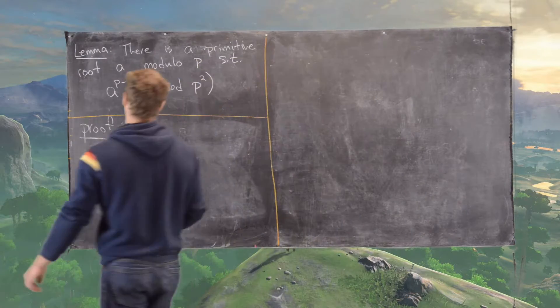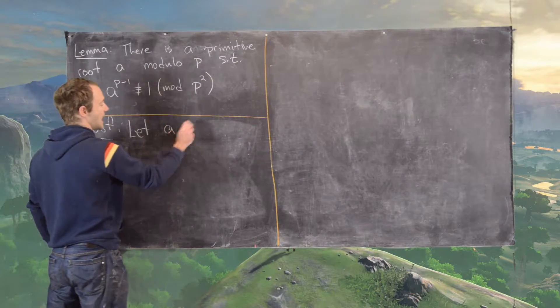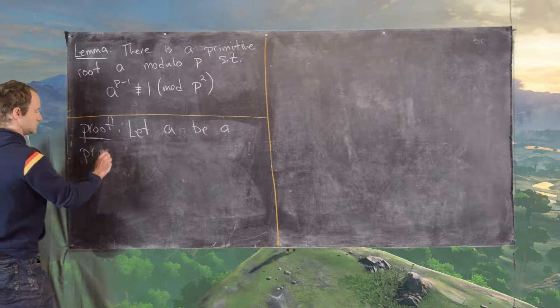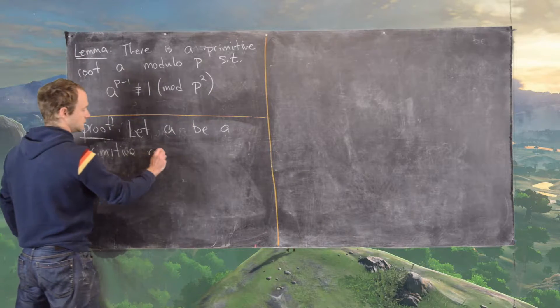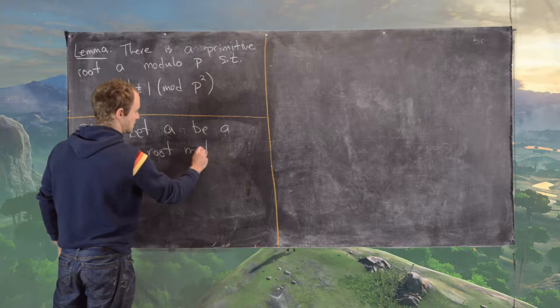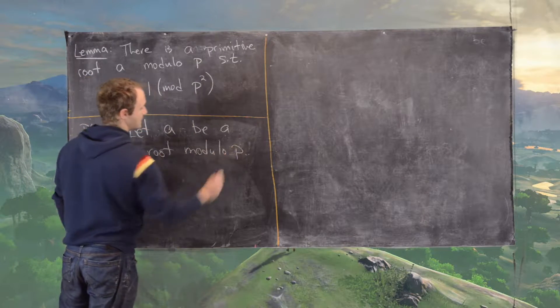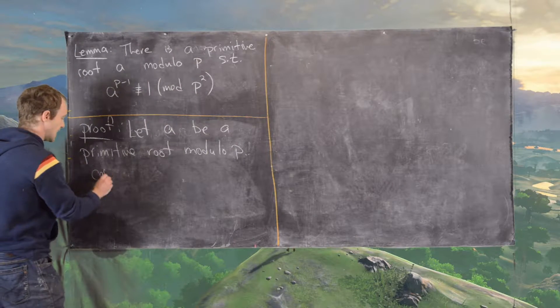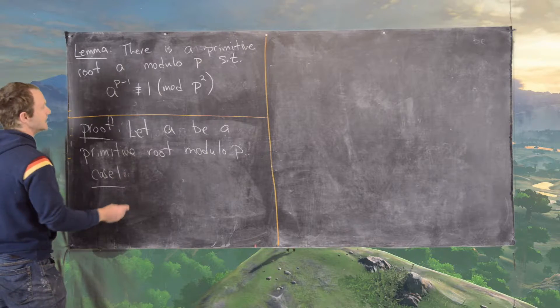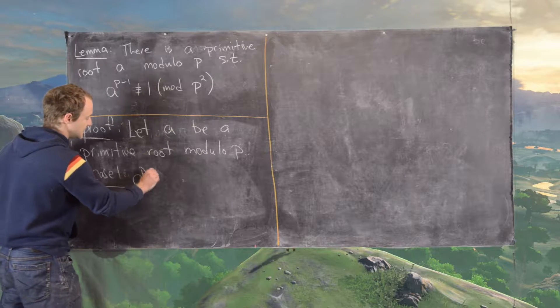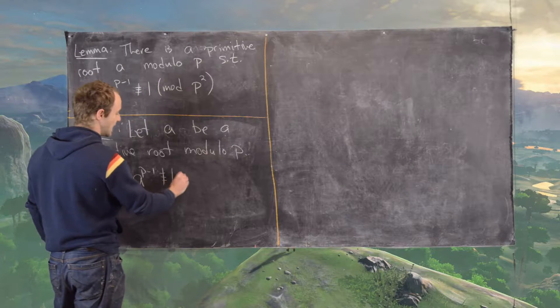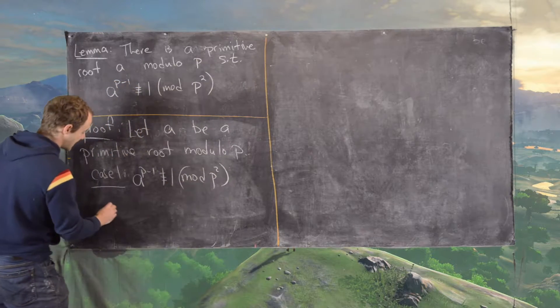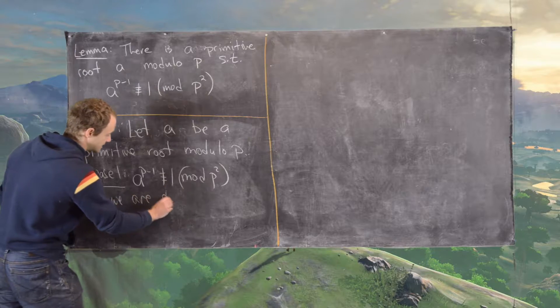So here's how we want to do that. Let a be a primitive root modulo p. And then really we have two cases here. Case number one is that we take a to the p minus one and we end up with something that is not congruent to one mod p squared. And in this case, we are done.